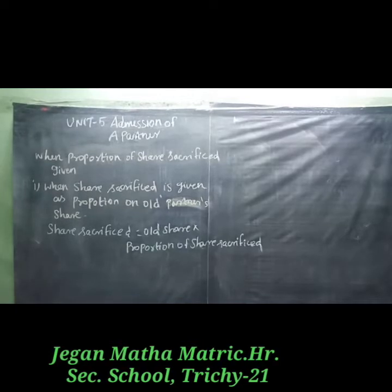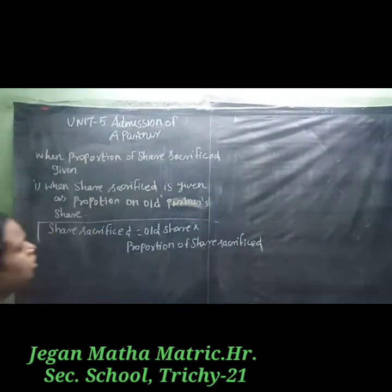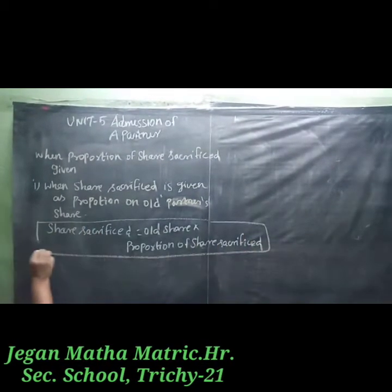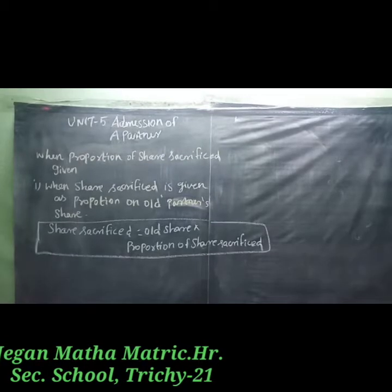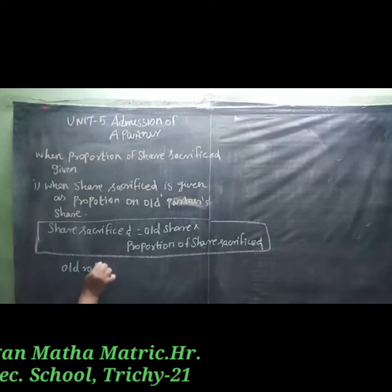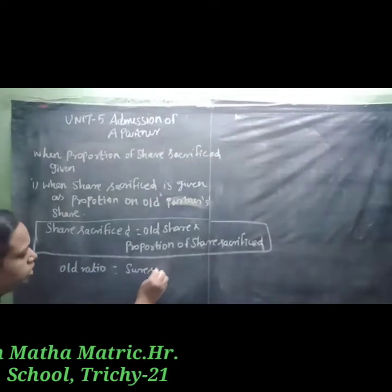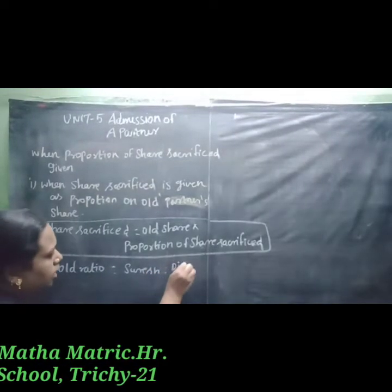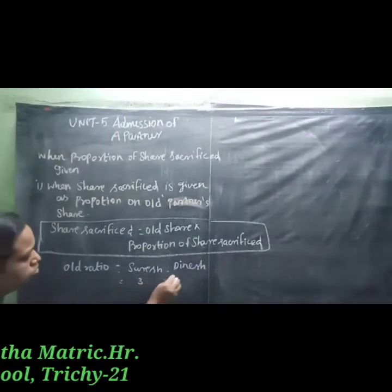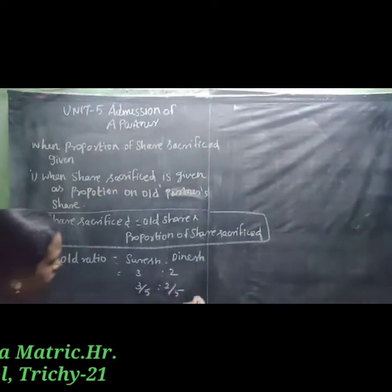First, write the formula: share sacrifice equals old share multiplied by proportion of share sacrifice. The old ratio for partners Suresh and Dinesh is 3 to 2. So Suresh's old share is 3/5 and Dinesh's old share is 2/5.